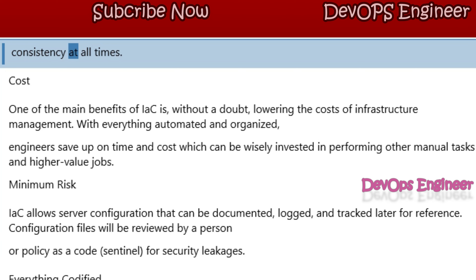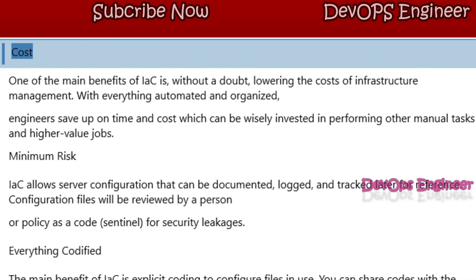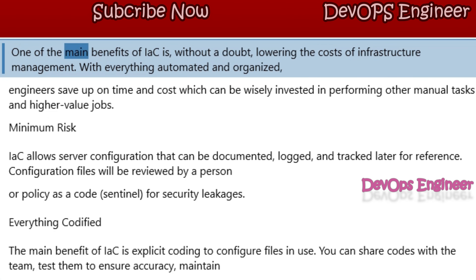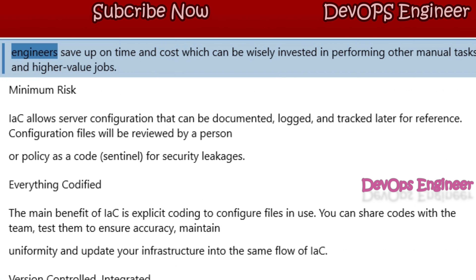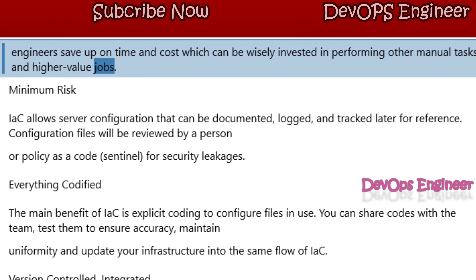Cost: One of the main benefits of IAC is, without a doubt, lowering the costs of infrastructure management. With everything automated and organized, engineers save up on time and cost, which can be wisely invested in performing other manual tasks and higher value jobs.